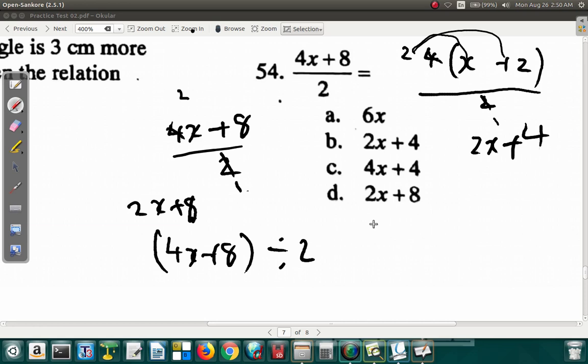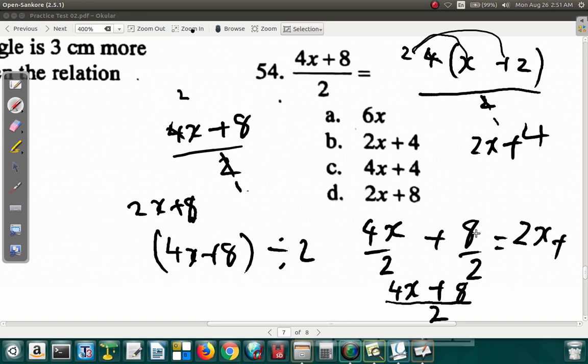In other words, if you have 4x over 2 plus 8 over 2, and you draw the line and find the LCM, 2 into 2 goes one time. 1 by 4x is 4x plus 2 into 2 goes one time. 1 by 8 is 8. So, 4x plus 8 all over 2 is the same as 4x over 2 plus 8 over 2. If you should factor them like this, 2 into 2, 1, 2 into 4, 2. So, this is 2x plus 2 into 2, 1, 2 into 8, 4 plus 4. It's 2x plus 4.